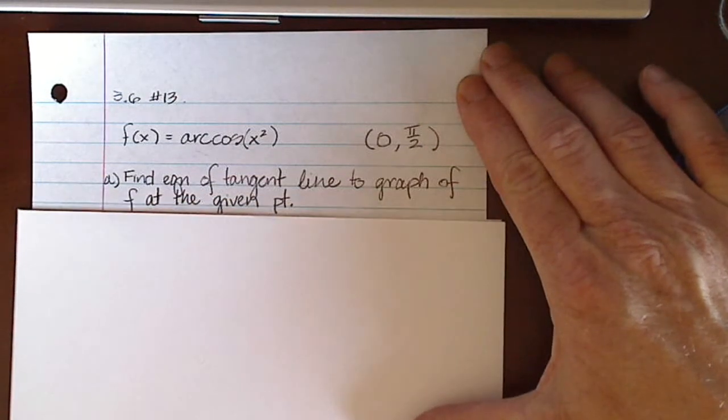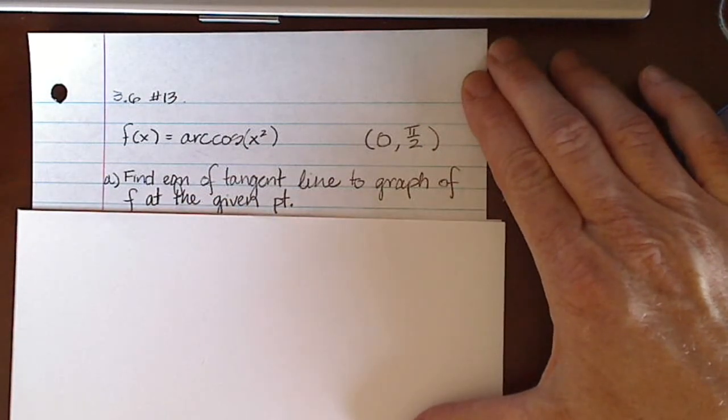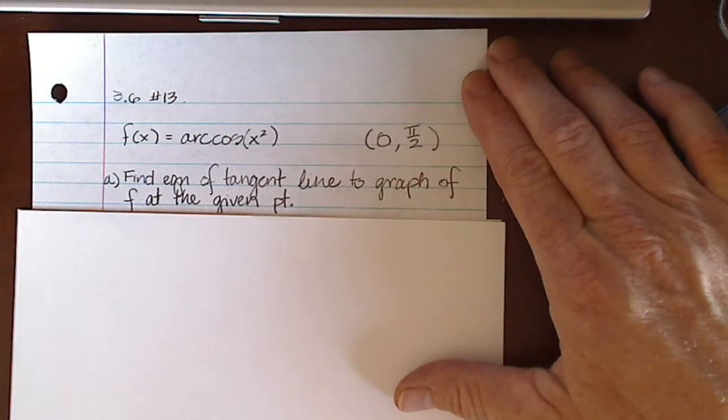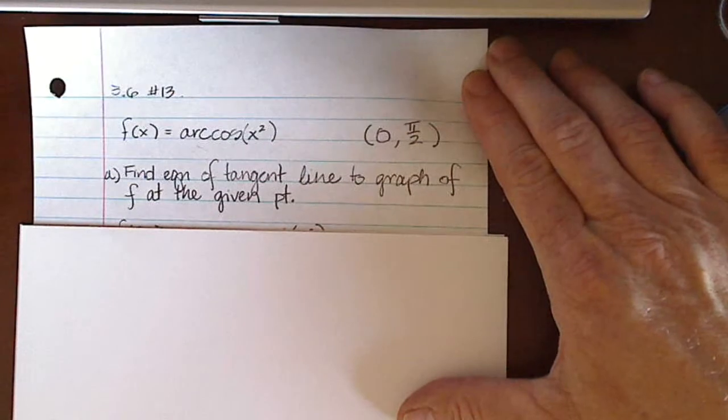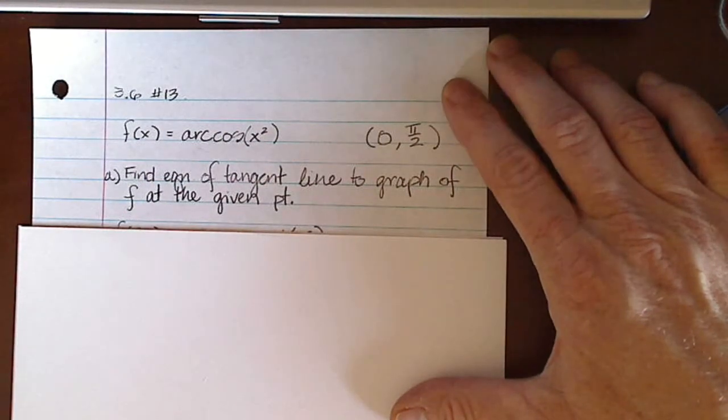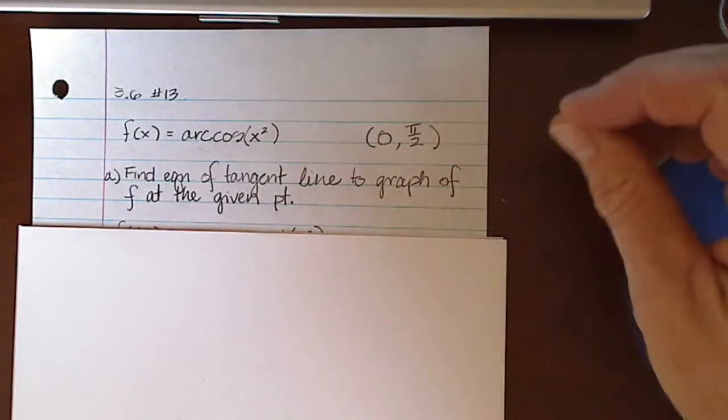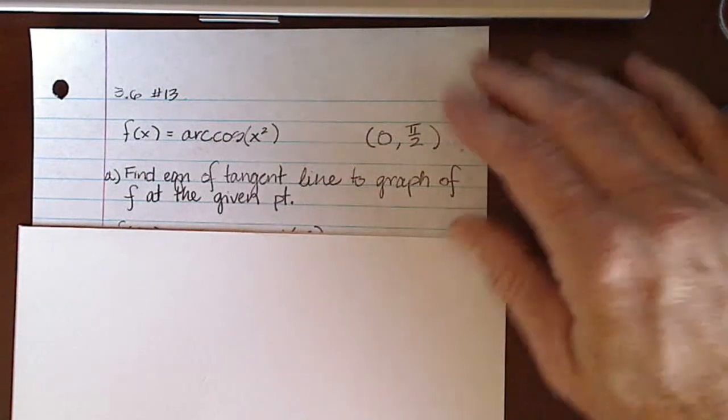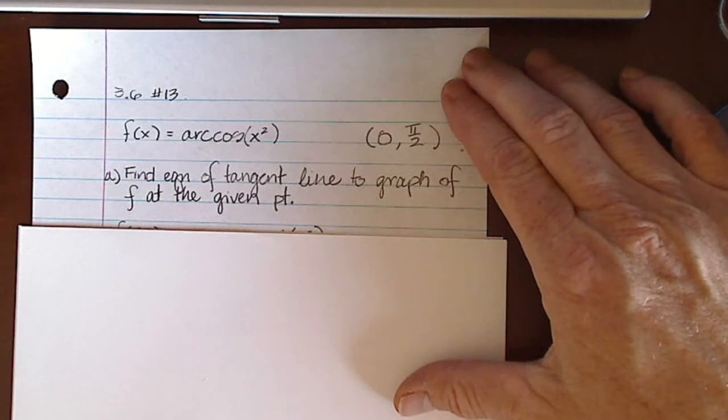So I know that the first part said to find the equation of a tangent line to the graph of F at the given point. So I know the tangent line, in order to get that equation, I need the slope, and the slope can be found using the derivative of the given function.